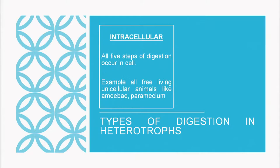What are the types of digestion in heterotrophs? It can be intracellular or extracellular. Intracellular digestion means all five steps — ingestion, digestion, absorption, assimilation and egestion — take place inside the cell only.